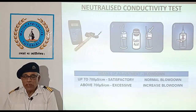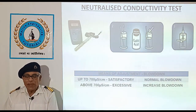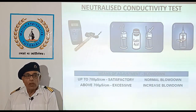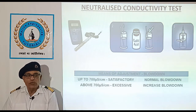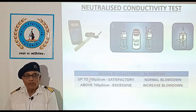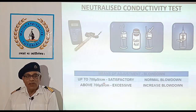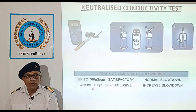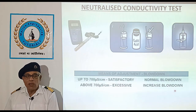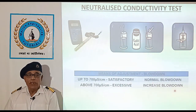Allow time for the reading to stabilize and note the reading on the display. Record the result and adjust the dosage as per the table. Up to 700 microsiemens per centimetre is the satisfactory range and we need to perform normal blowdown. But if the conductivity goes beyond 700 microsiemens per centimetre, we need to increase the blowdown to reduce the conductivity.